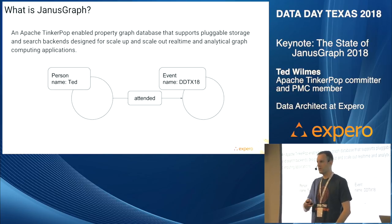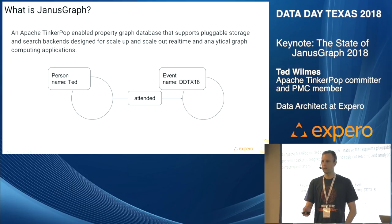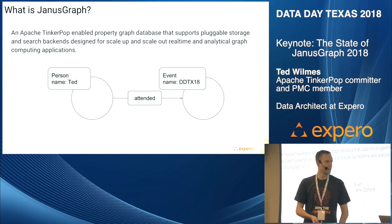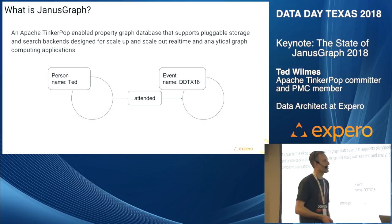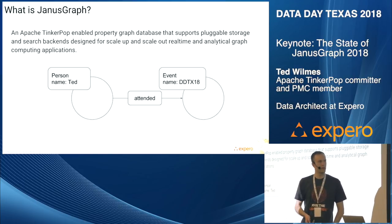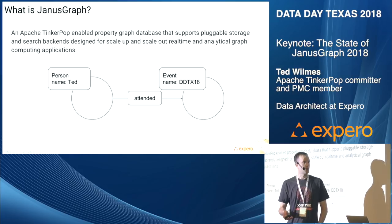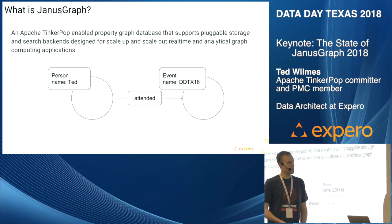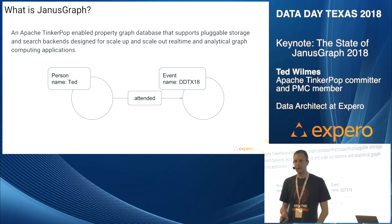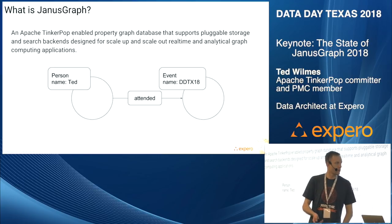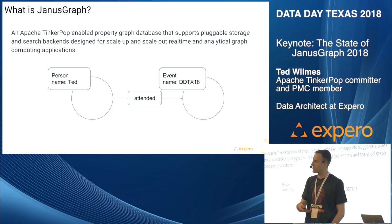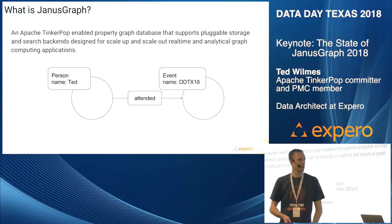How many of y'all know what JanusGraph is or have some familiarity? Okay, cool. So it's not totally unknown. Since I'm the first graph talk of the day, I'll try to take one for the team and hopefully be the only one who has to show what a property graph is. JanusGraph stores data as a property graph where we have vertices and edges, and the vertices and edges have labels. So we're not talking about a triple store here, but an actual property graph.